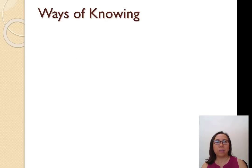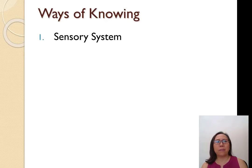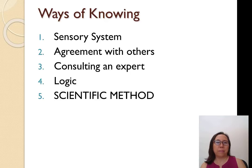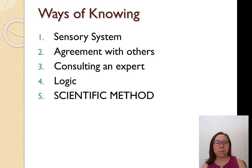There are five different ways of knowing something: sensory system, agreement with others, consulting an expert, logic, and scientific method. Scientific method is emphasized because that's where we want to spend most time, leading into why we want to look at data and talk about data analysis.